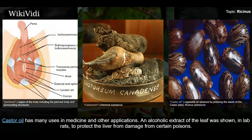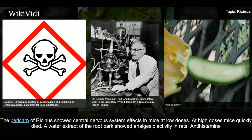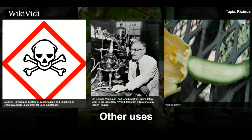Castor oil has many uses in medicine and other applications. An alcoholic extract of the leaf was shown in lab rats to protect the liver from damage from certain poisons. Methanolic extracts of the leaves of Ricinus communis were used in antimicrobial testing against eight pathogenic bacteria and showed antimicrobial properties. The pericarp of Ricinus showed central nervous system effects in mice at low doses; at high doses, mice quickly died. A water extract of the root bark showed analgesic activity in rats. Antihistamine and anti-inflammatory properties were found in ethanolic extract of Ricinus communis root bark.